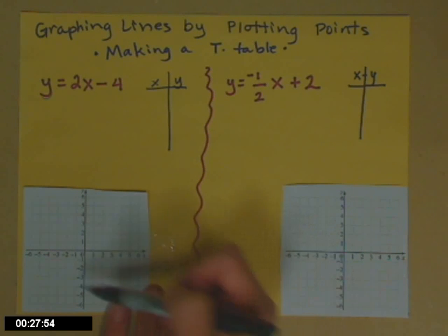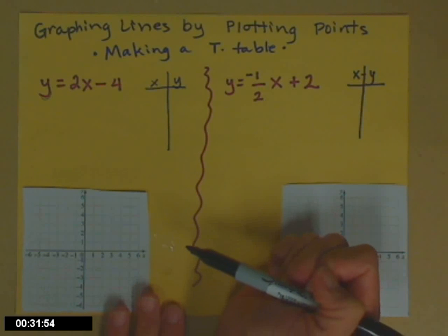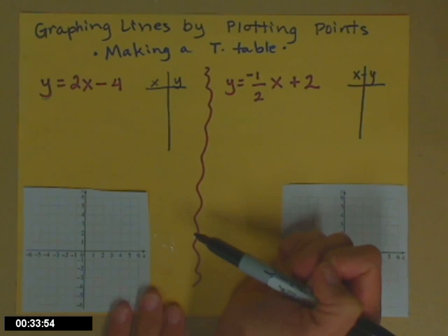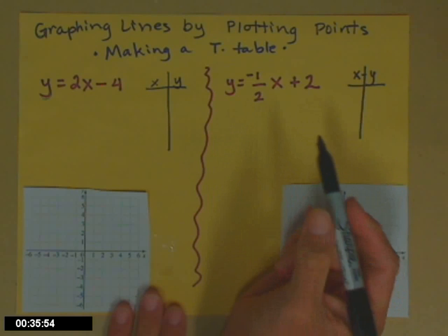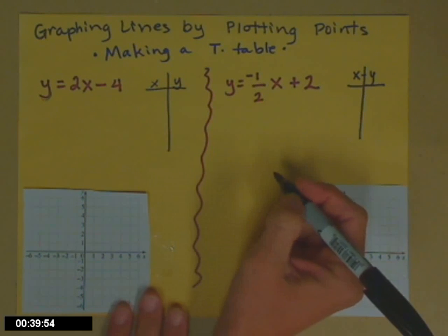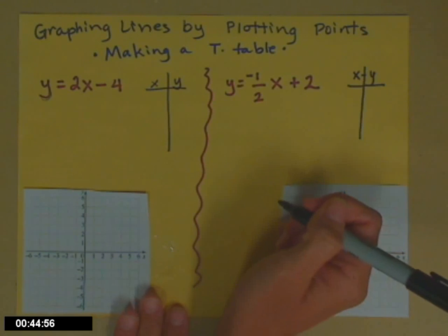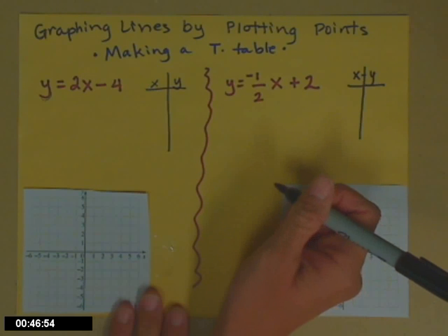All of the ordered pairs that if you plugged them in would make that true. Well, we don't want to find all of them. We just want to find 3 or 4. So here's the part that most students don't like. You need to choose some x values or some y values. Typically we choose x because that sort of sets itself for functions that come later.